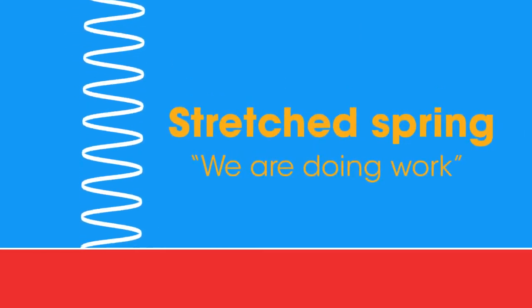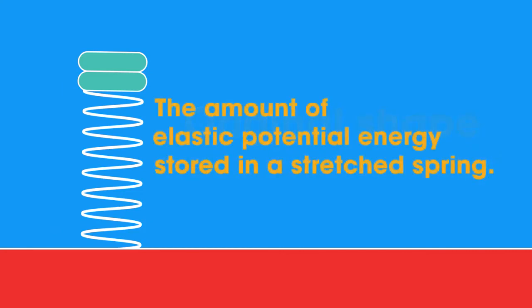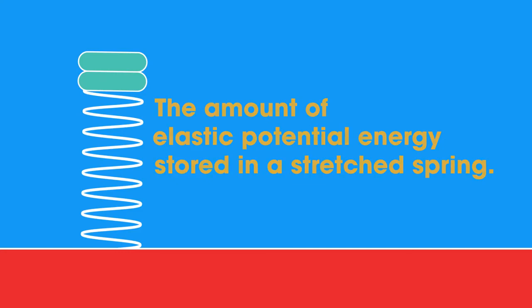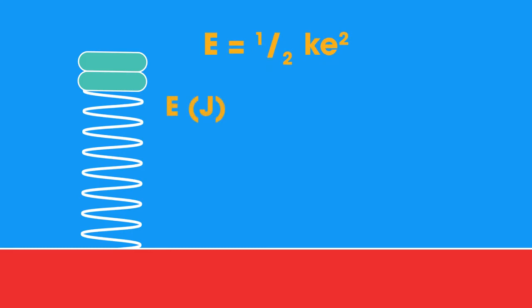When we stretch a spring, we can change its shape. We are doing work. The spring can then go back to its original shape, and the energy stored in it is released. The amount of elastic potential energy stored in a stretched spring can be calculated using this equation. Elastic potential energy E equals 0.5 times spring constant times extension squared, assuming the spring obeys Hooke's law, where elastic potential energy E is measured in joules, spring constant k in newtons per metre, and extension E in metres.